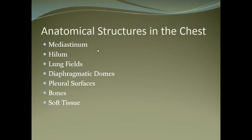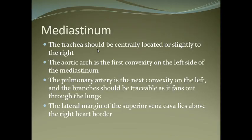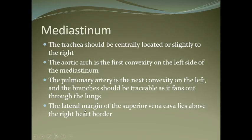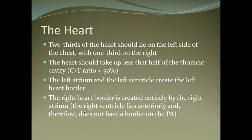The anatomical structures in the chest include the mediastinum, hilum, lung fields, diaphragmatic domes, pleural surfaces, bones, and soft tissues. In the mediastinum, the trachea should be centrally located or slightly towards the right. The aortic arch is the first convexity on the left side of the mediastinum. The pulmonary artery is the next convexity on the left, and its branches should be traceable as they fan out through the lungs. The lateral margin of the SVC lies above the right heart border.